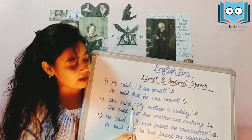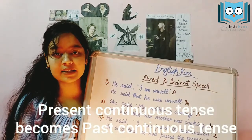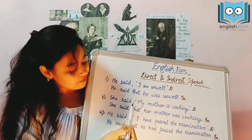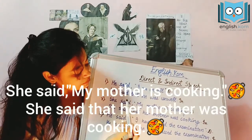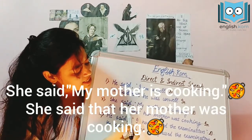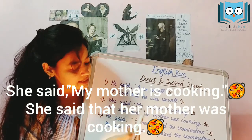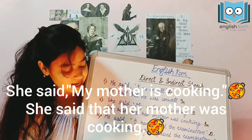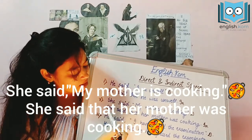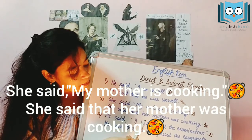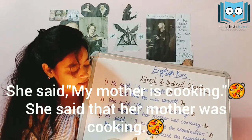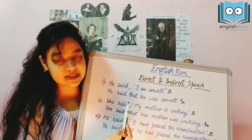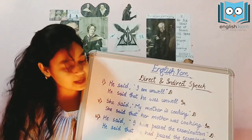Then we have the present continuous, which gets converted to the past continuous. For example, she said, 'My mother is cooking.' This is the direct form, and in the indirect form we have: she said that her mother was cooking. So the present continuous gets converted to past continuous.